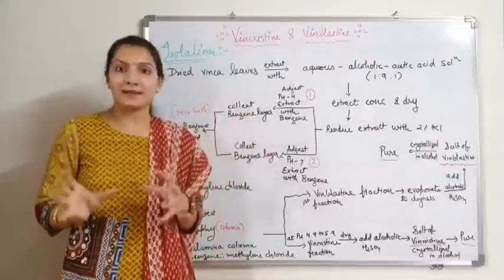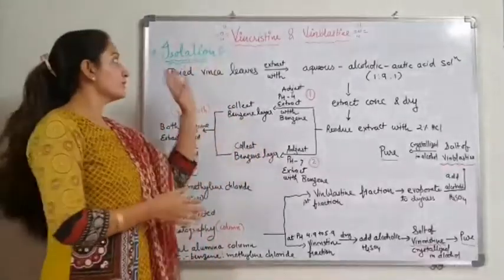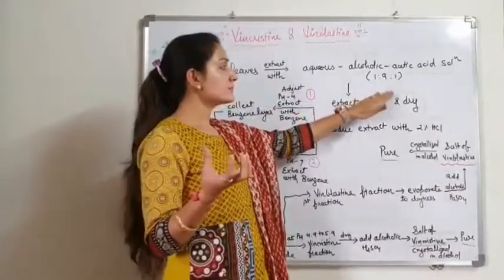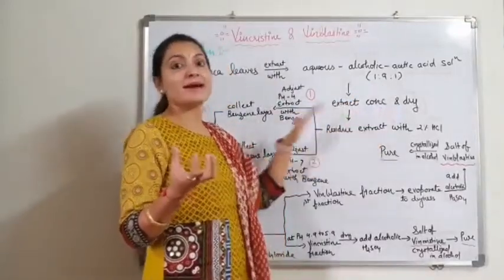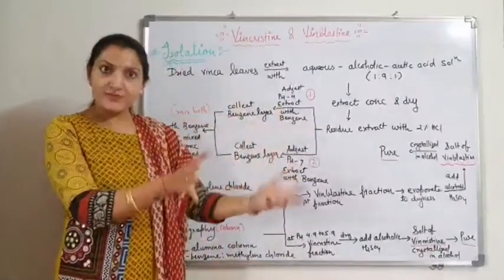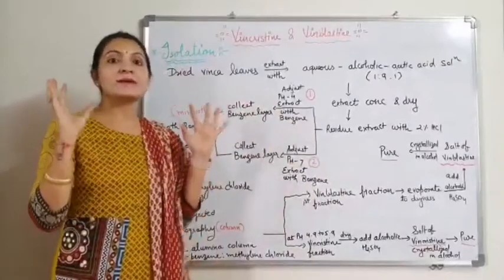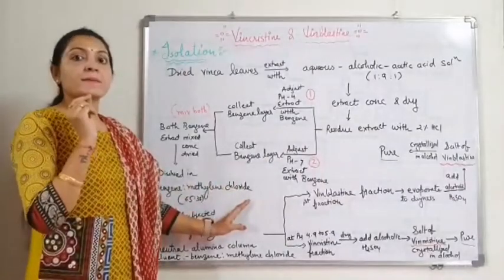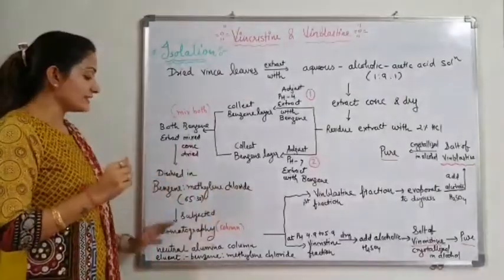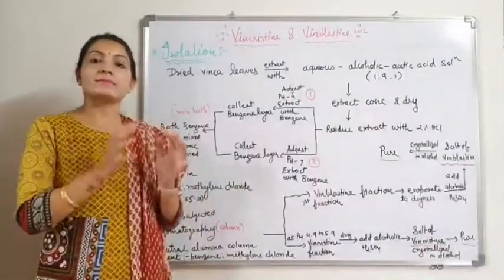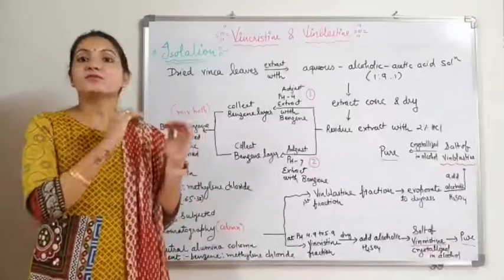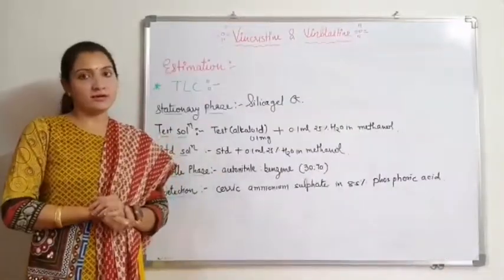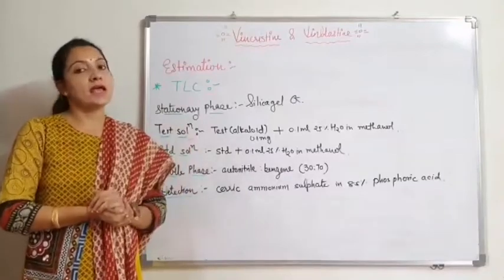So by this isolation method, we isolate Vincristine and Vinblastine in sulphate salt form by column chromatographic method. In summary: we first extract alkaloids from the plant, convert them into salt form, then by adjusting the pH we convert them back to base form and extract with benzene. We then dissolve the residue in benzene-methylene chloride (the mobile phase), subject it to column chromatography, and obtain Vincristine and Vinblastine by fractional elution.